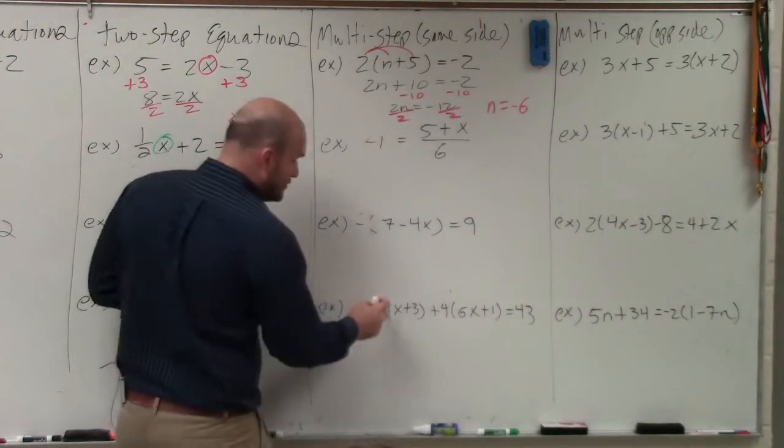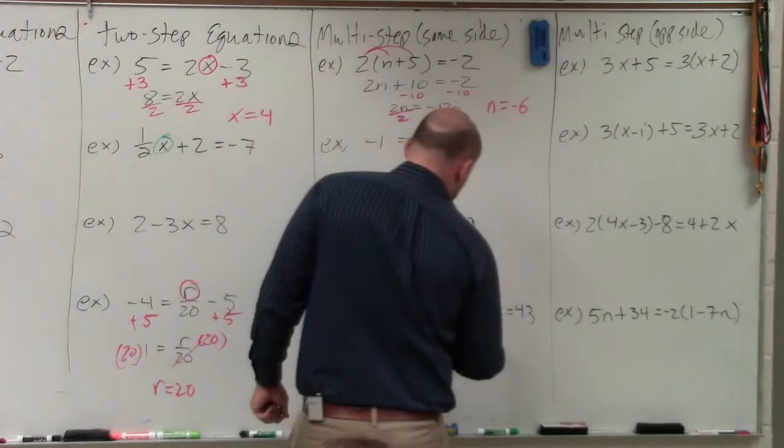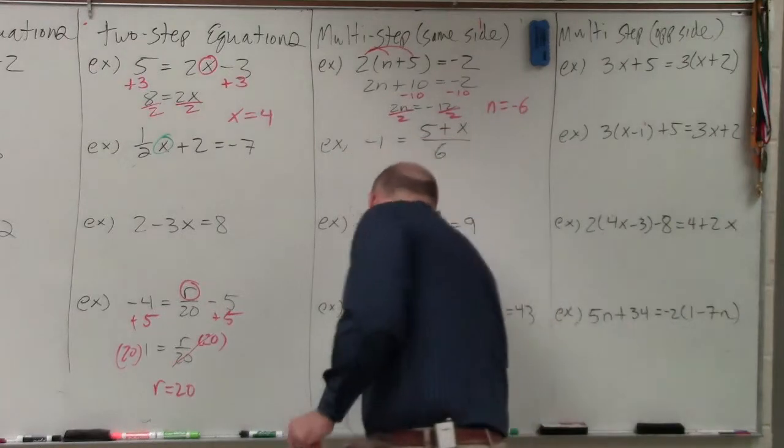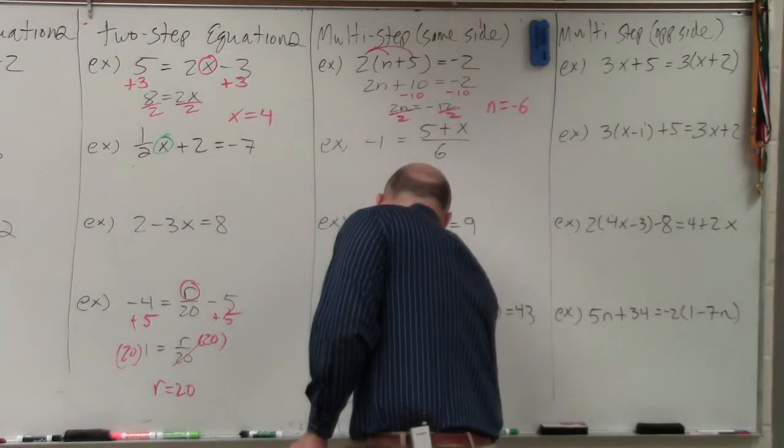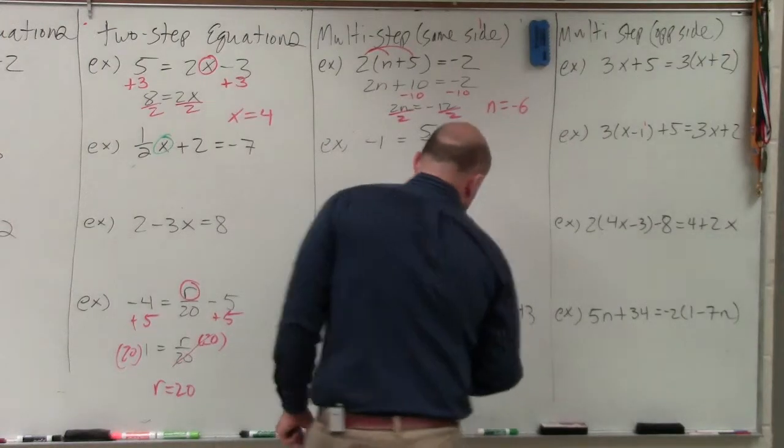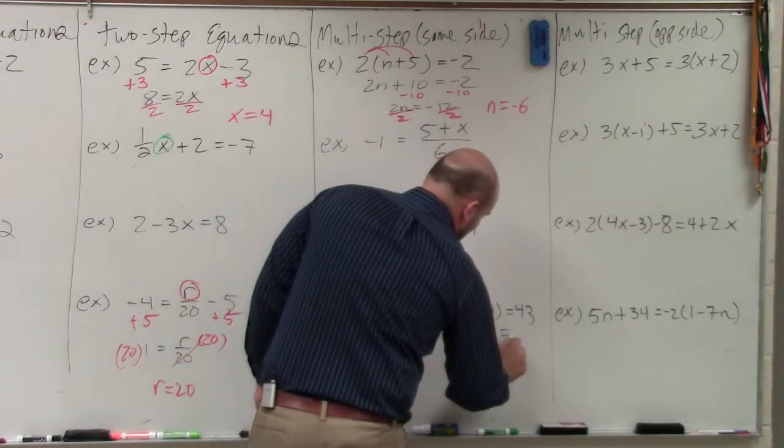First of all, you see parentheses. I have two of them. So apply distributive property for both of them. Negative 3 times 4x is going to be negative 12x. Negative 3 times 3 is negative 9 plus 24x plus 4 equals 43.